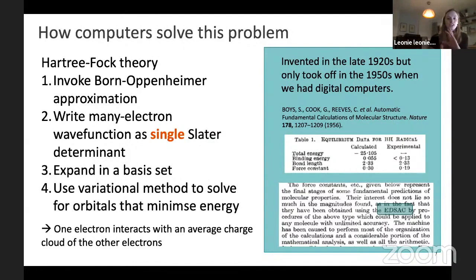You typically work in a basis set — a set of functions that you can combine to describe your one-electron wave functions, which are typically called orbitals. You then use a variational method to solve for the orbitals that minimize the energy. This is an iterative procedure — you look at each electron in terms of how it interacts with an average charge of all the other electrons. It's a kind of mean-field theory.